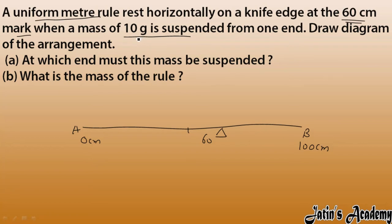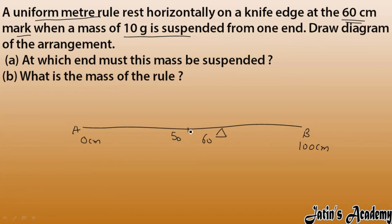First of all we have to think: where does the weight of this uniform meter rule act? For a uniform meter rule, the weight acts at the center — that is at 50 centimeter. So here at the 50 centimeter mark I have the weight, which equals mg.